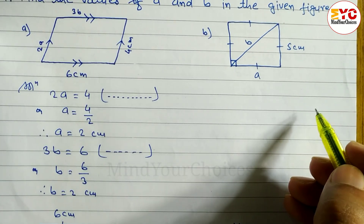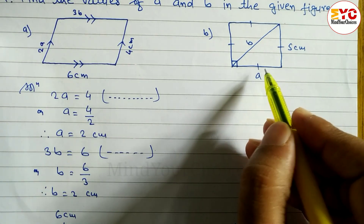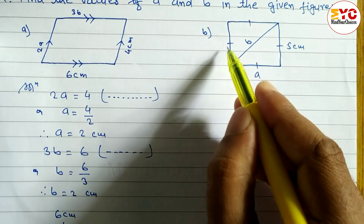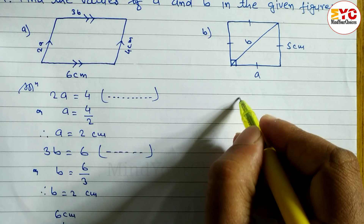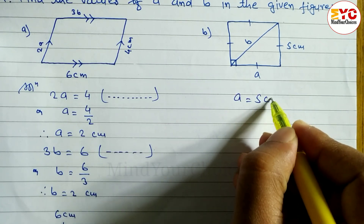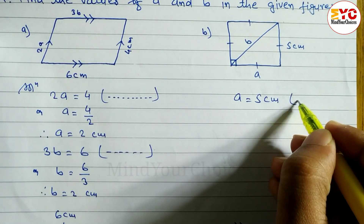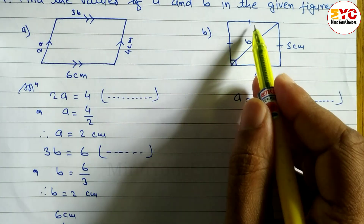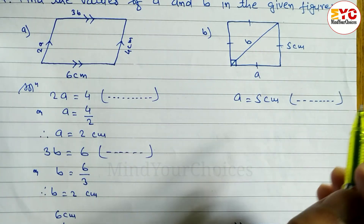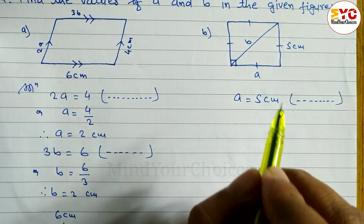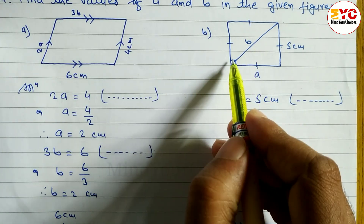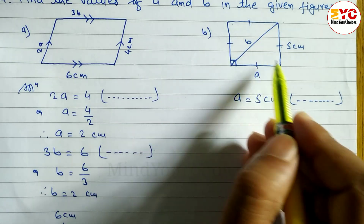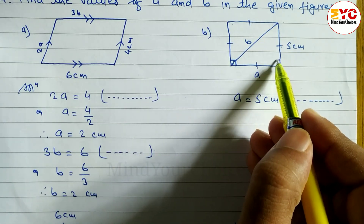Now look at question b. Here you can see this is a square. In a square, all sides are equal — the signs are also given showing all are equal. So we can write a is equal to 5 centimeters. In a square, all angles are 90 degrees.